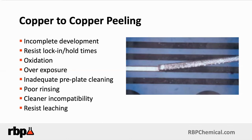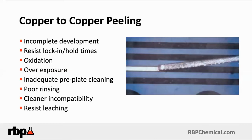A good example involves the electroless process: the cleaner conditioner is a very important aspect, as it helps enhance the adsorption of the palladium catalyst to the surface. However, some cleaner conditioners have such a strong affinity to attract palladium to the copper that we end up getting too much palladium on the surface, creating a barrier to good adhesion and causing peelers. So look at your catalyst situation — are you putting too much palladium down? Are you over-conditioning? Do you have poor rinsing? All of these are factors that can lead to the electrolytic copper peeling from the surface.